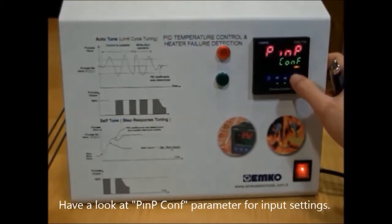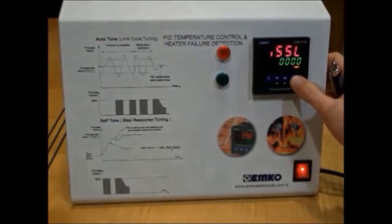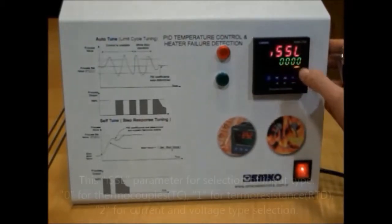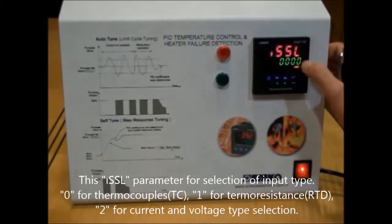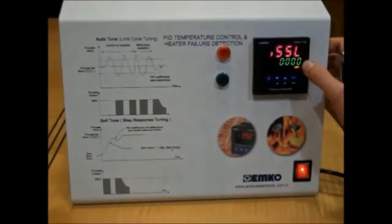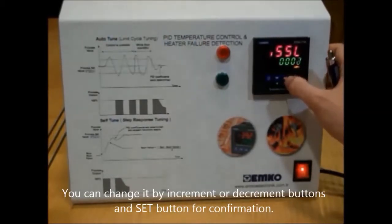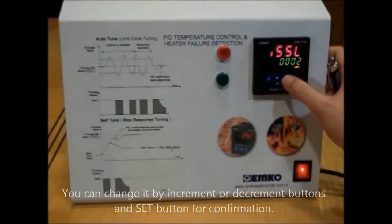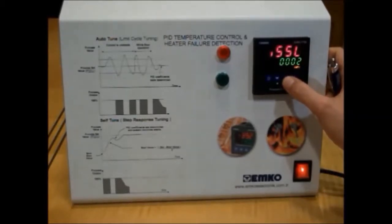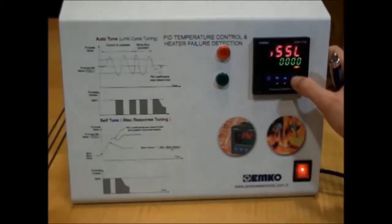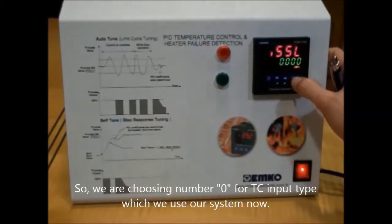Pin configuration. When we enter the pin configuration parameter, we will see here issl parameter. We use this one for choose input type. If you choose number zero, it is for thermocouple input selection. And one is RTD input selection and two is voltage and current input selection. We use now thermocouple input selection. So, we choose number zero.